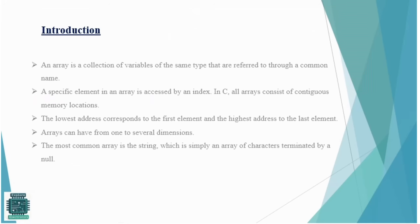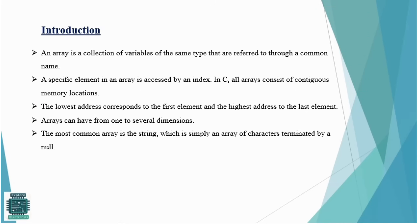Now let us move on. The first thing is: what is an array? An array is nothing but a collection of variables of the same type that are referred to through a common name. In simple terms, it's a collection of homogeneous elements — it should contain a common thing among all the elements. A specific element in an array is accessed by an index. In C, all arrays consist of continuous memory locations.